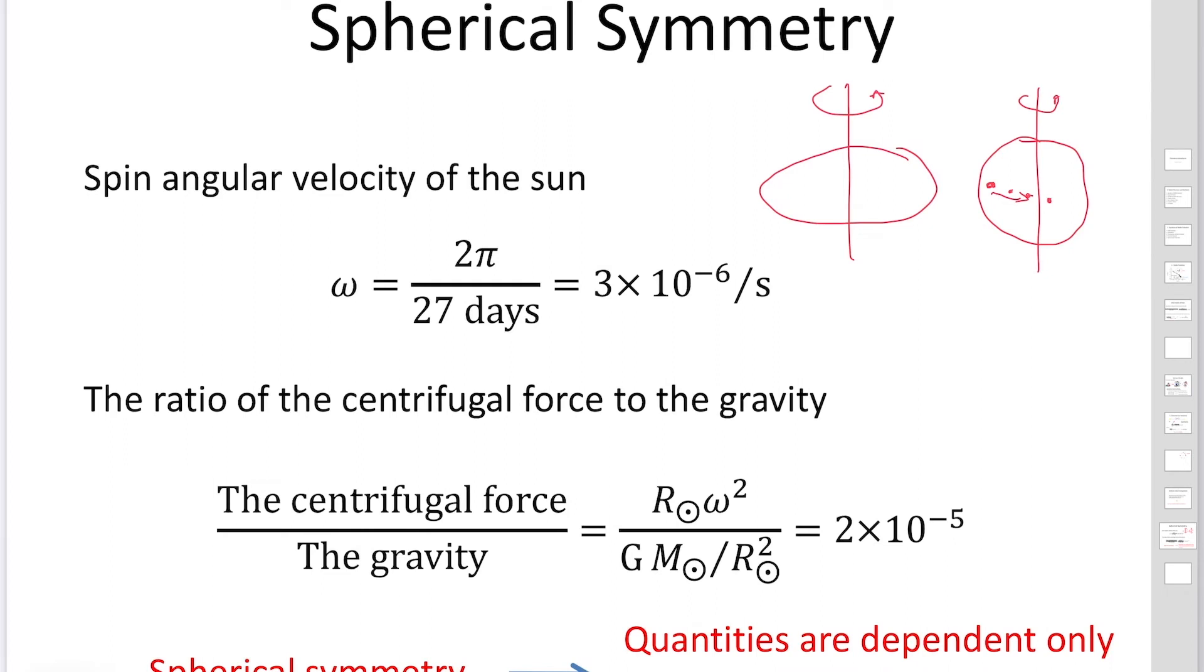Then we realize the sun is spinning. Depending on the angular velocity of our star, if the angular velocity is really small, the shape of the star is like a sphere. But if we consider really large angular velocities, the shape becomes elliptical. We have to consider the angular velocity: 2π divided by the period of the sun, 27 days. The spinning angular velocity becomes 3 times 10 to minus 6 per second.